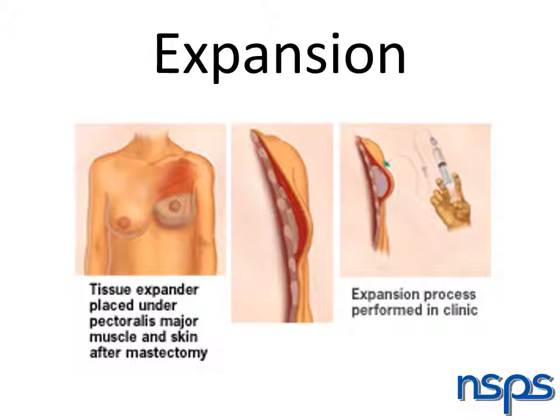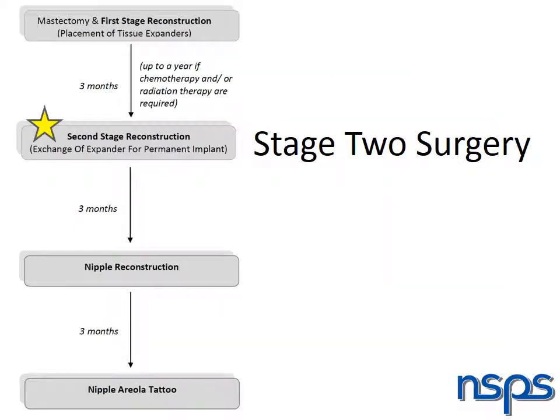Expansions can be done during chemotherapy but not during radiation therapy. After you have completed expansions, your second stage surgery is performed. This usually takes place three months after your first surgery or after chemotherapy and radiation are complete. Some second stage surgeries occur six to nine months after initial surgery depending on treatment schedules.